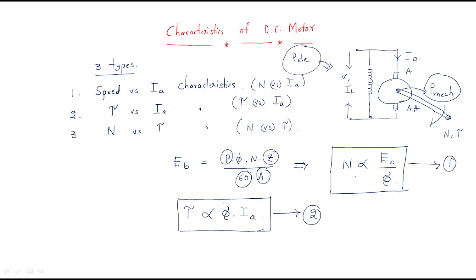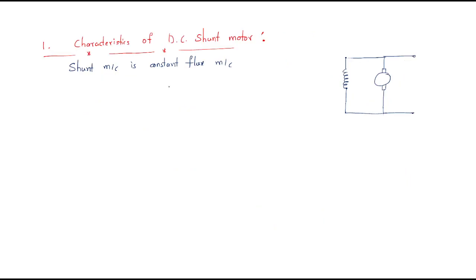We have three characteristics to discuss for different types of DC motors. We will discuss these three characteristics, starting with the characteristics of the DC shunt motor.